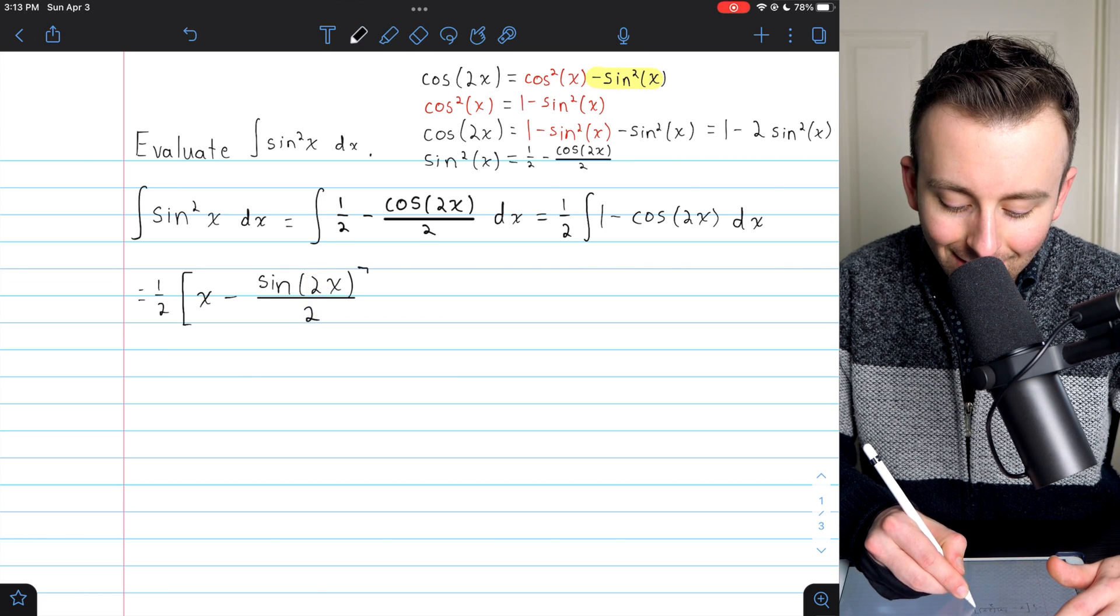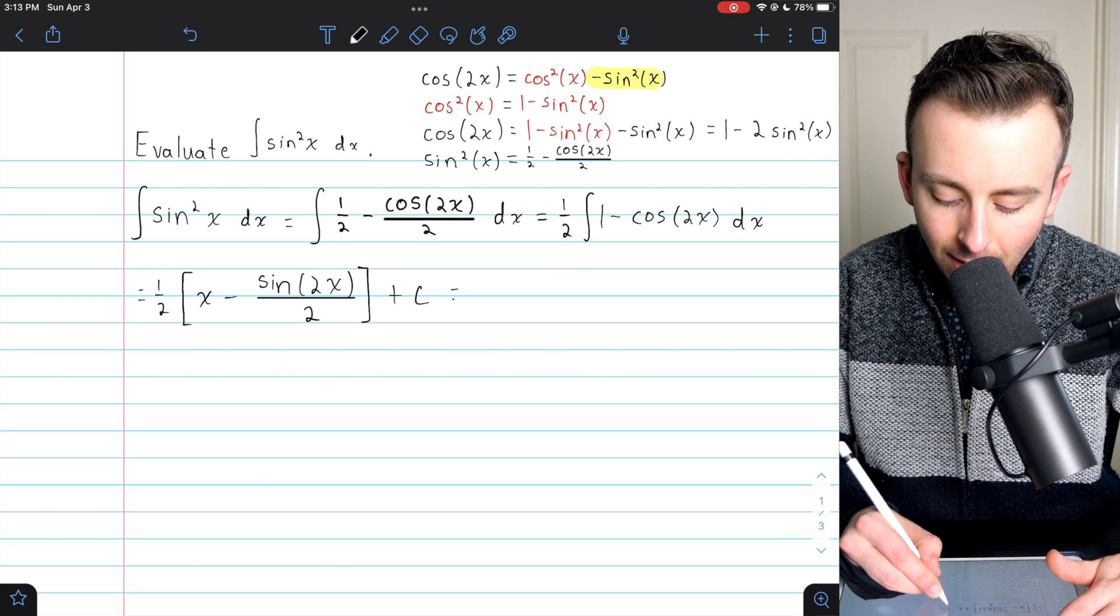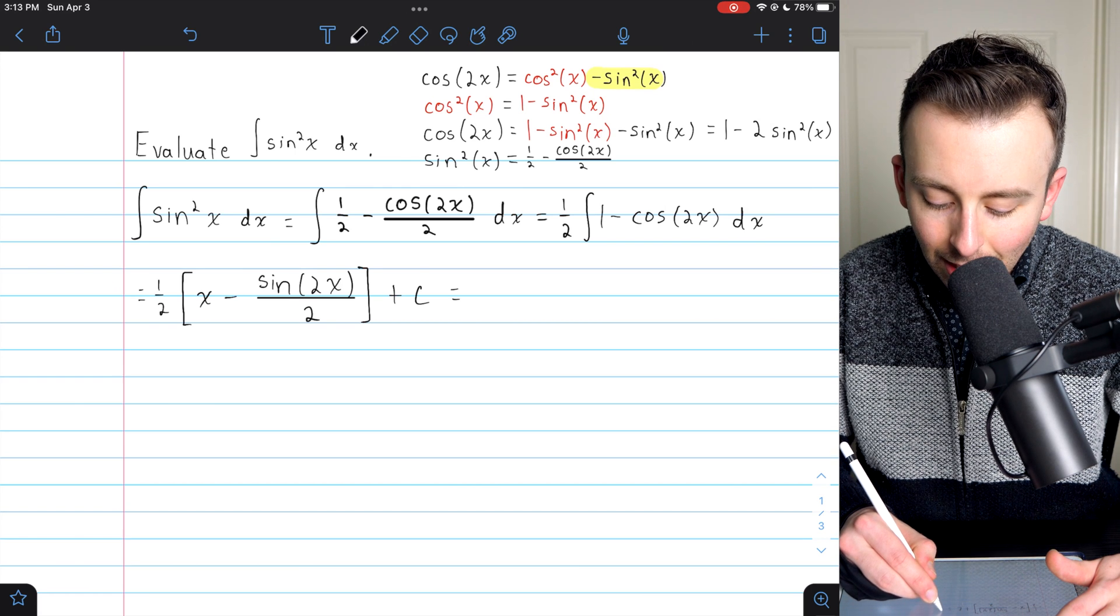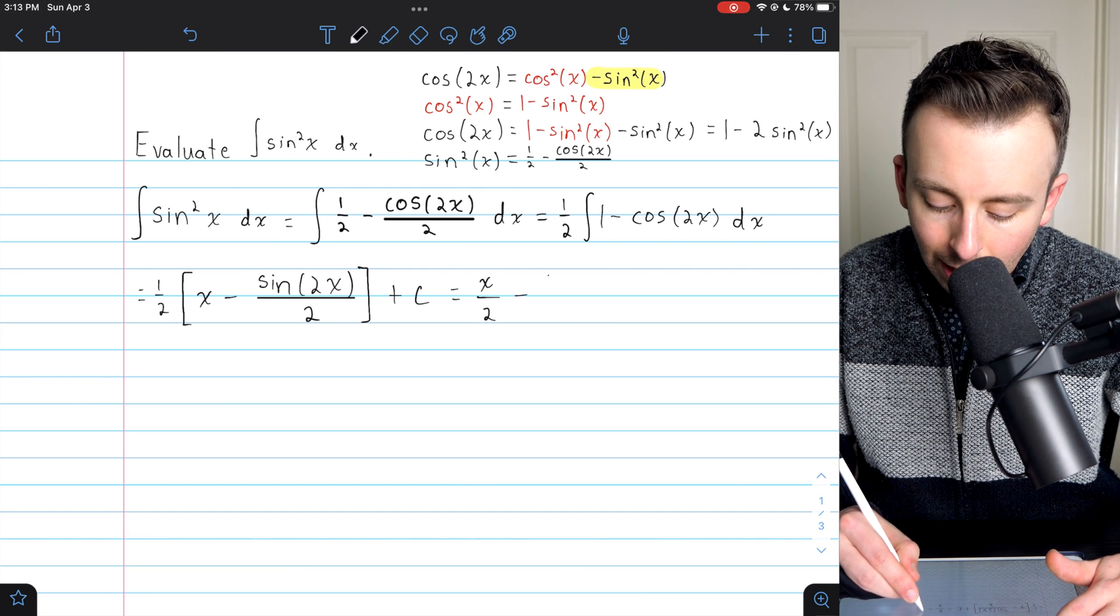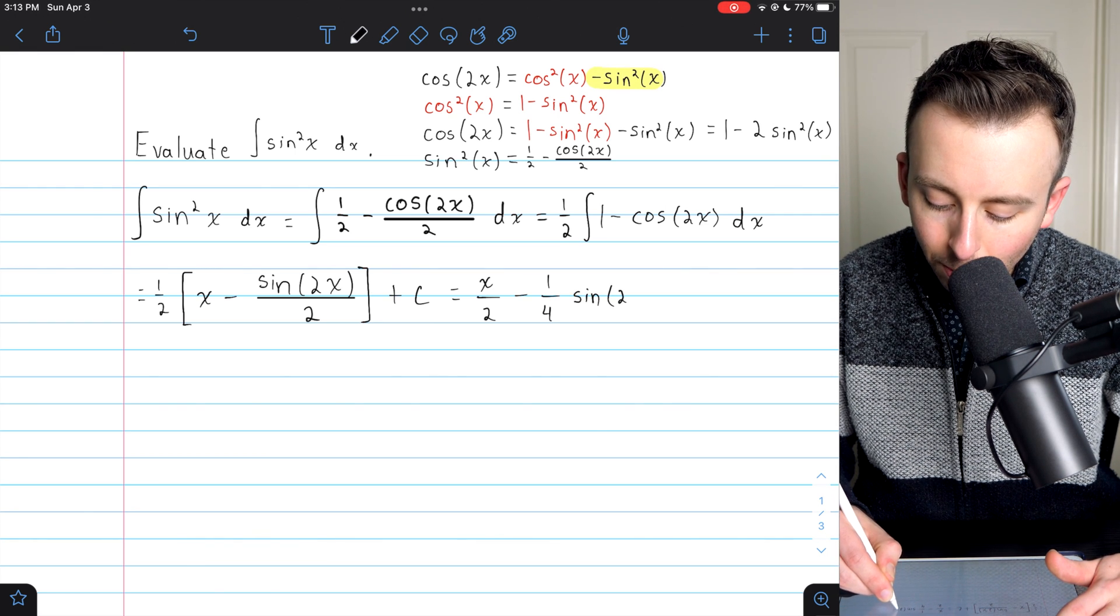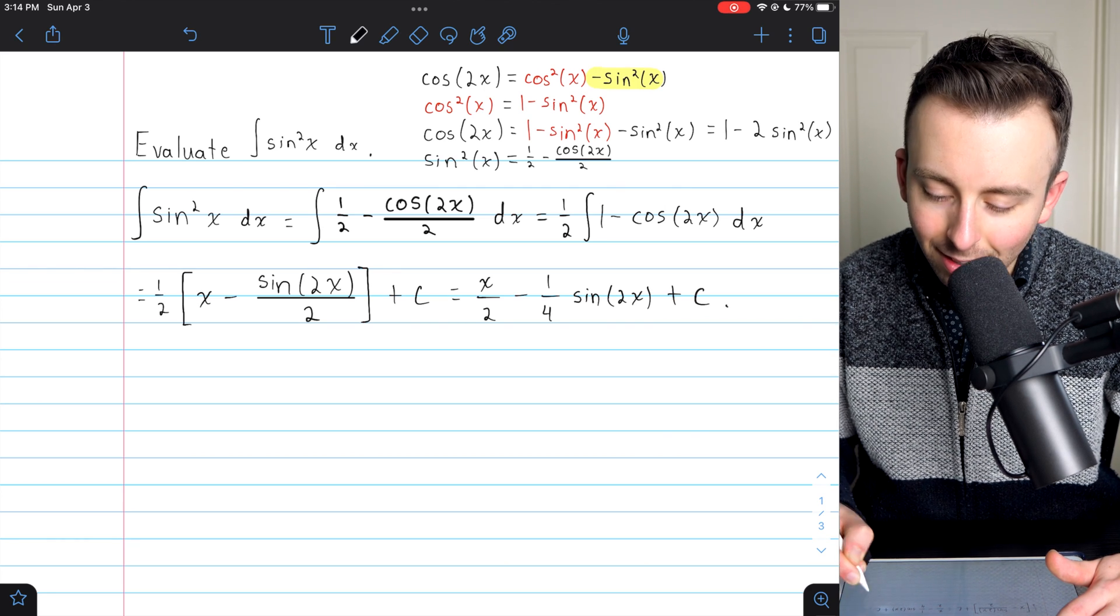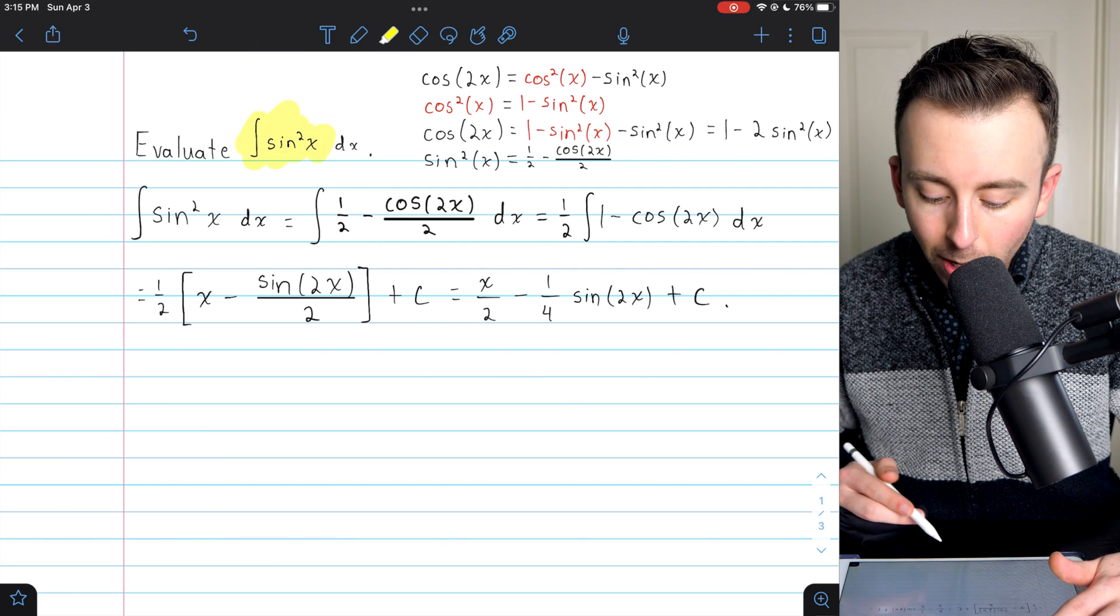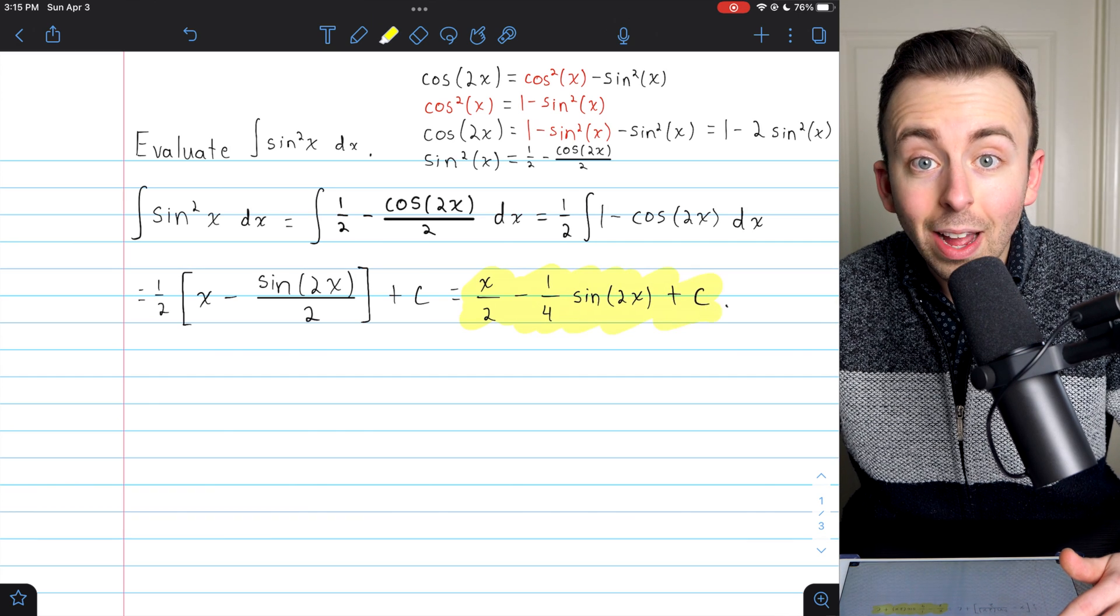And so that is our answer. We need to add our arbitrary constant, and then we should distribute the one half through the brackets, leaving us with x over 2 minus one fourth sine of 2x plus the arbitrary constant c. And that's our answer. And that's how you show the integral of sine squared of x is x over 2 minus a fourth sine of 2x plus c.